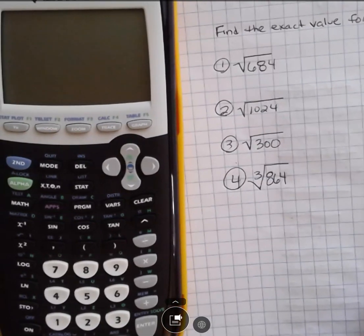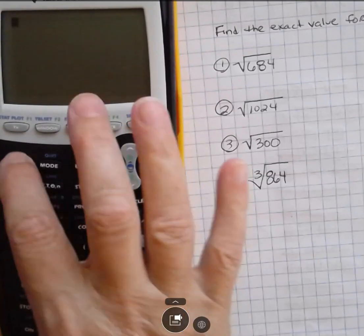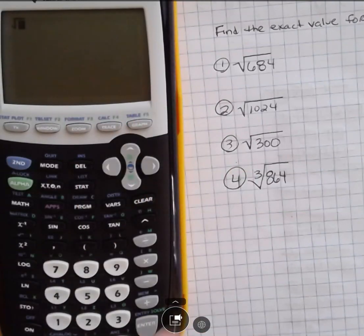If you put this into the calculator directly, if you put second function, square root, 684, it's going to give you a decimal answer. And you might need the exact answer rather than the decimal answer.